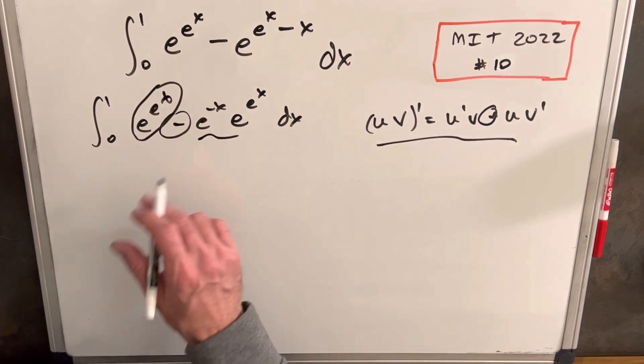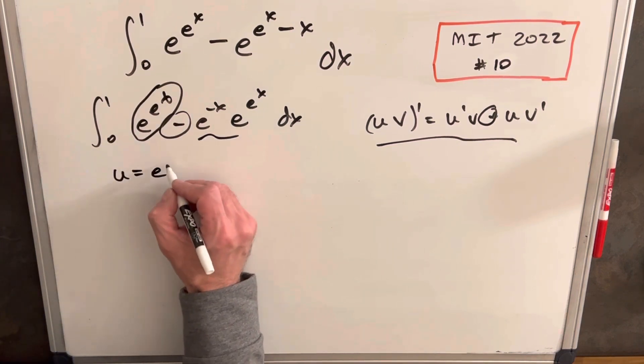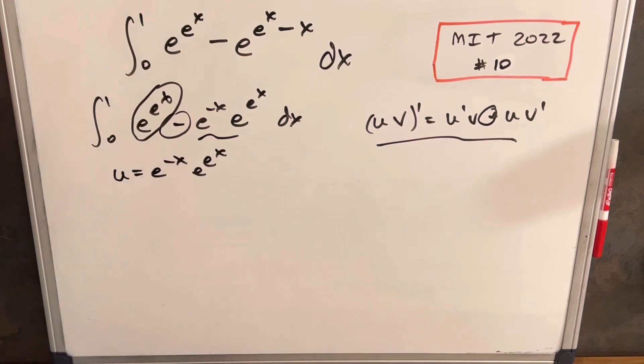These are a little hard to unwind. I usually guess and check and try different things. So let's try u = e^(-x) · e^(e^x) and see what happens.